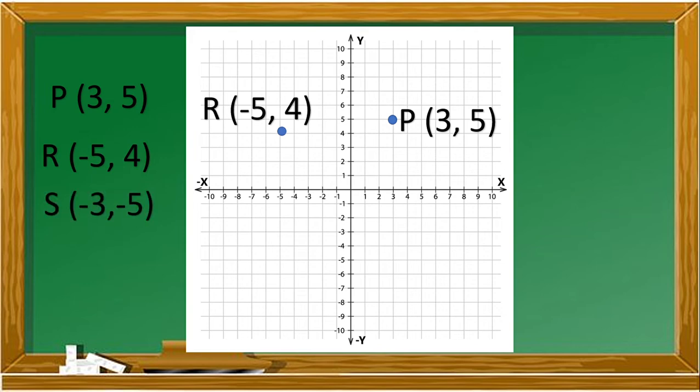Next, where can we locate our point S with the coordinate of negative three and negative five? For our point S, start at the origin of zero and zero, move three units to the left and five units down. This is the plot of our point S with the coordinate of negative three and negative five.